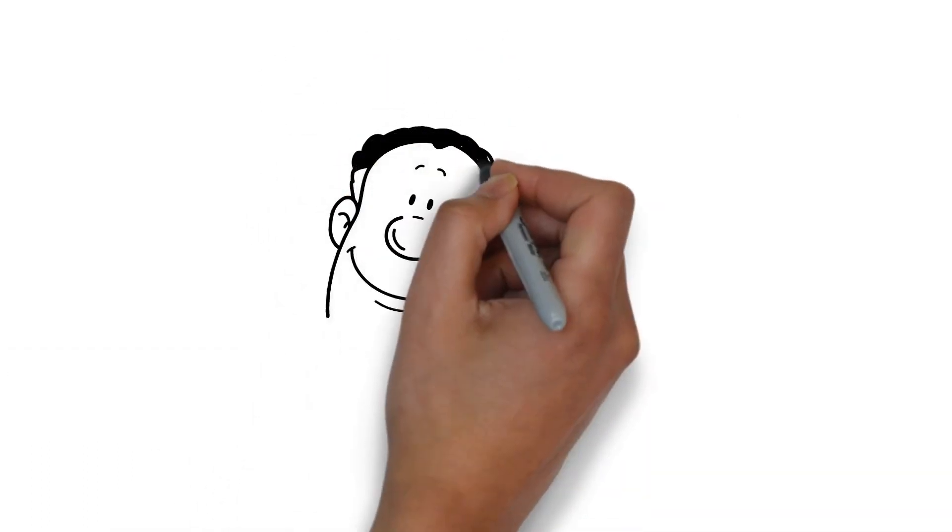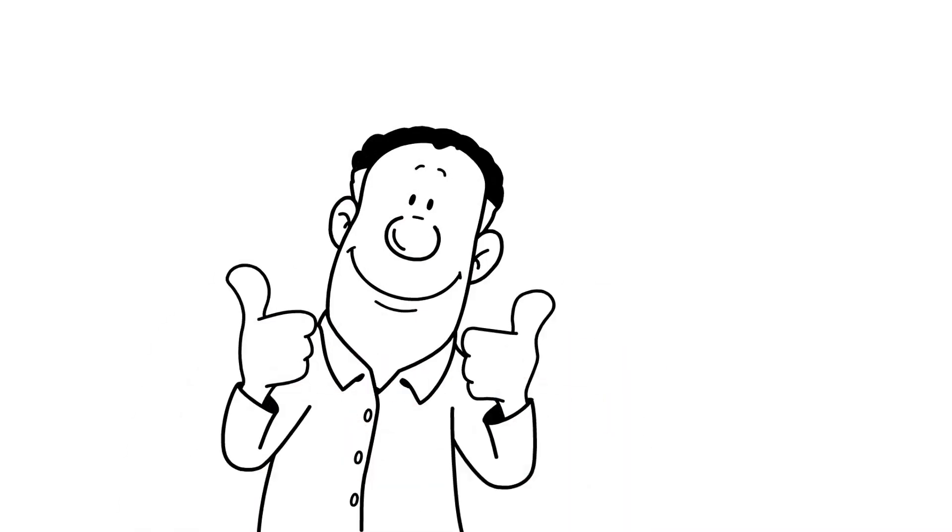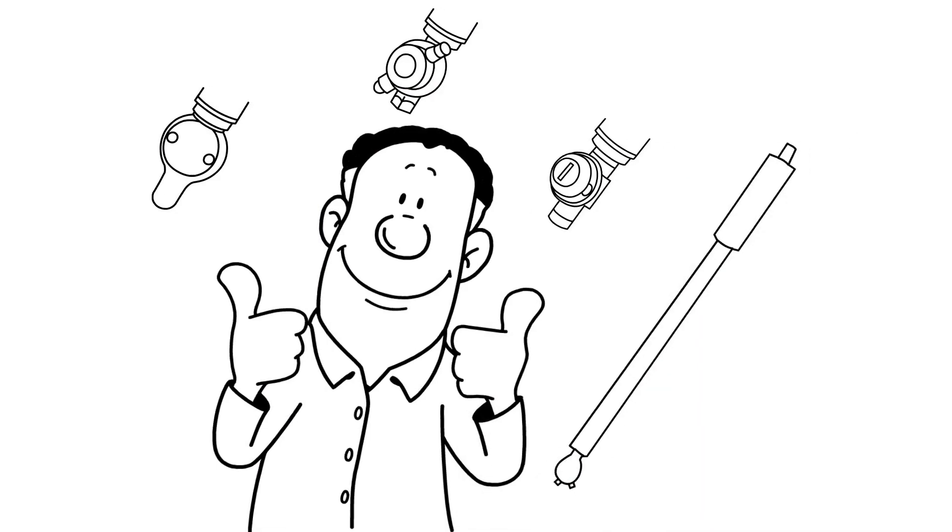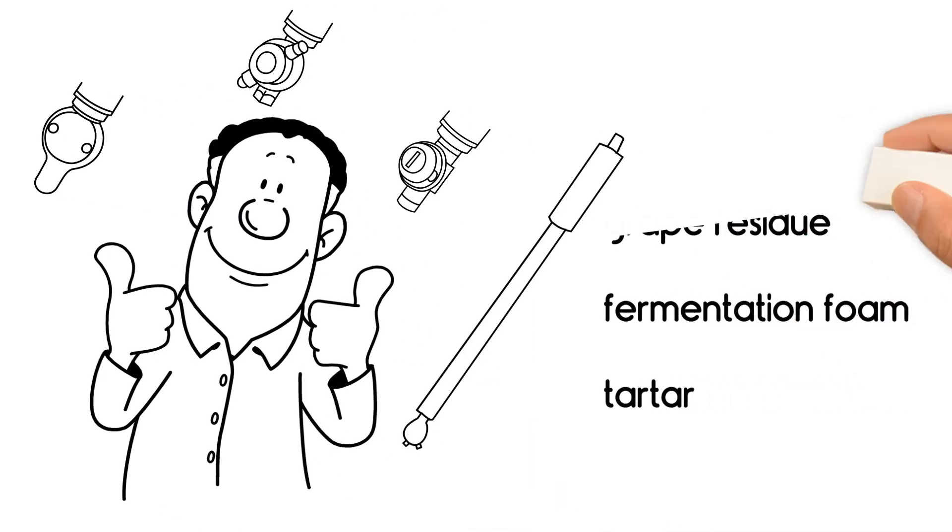Of course there is! With the advanced and effective Wine Tank System by Mulk Cleaning Systems, you can clean your tanks thoroughly, quickly and automatically from grape residue, fermentation, foam or tartar.